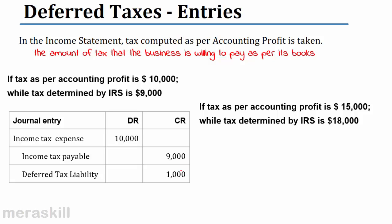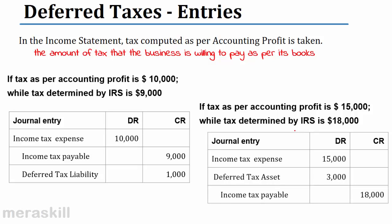Now consider the reverse: if tax as per accounting profit is $15,000 but tax determined by IRS is $18,000, the expense is $15,000 but we will pay $18,000. We end up having an asset of $3,000. Income tax expense is $15,000 but payable is $18,000, so we will pay $18,000. This difference is actually prepaid, and therefore it is called a deferred tax asset.